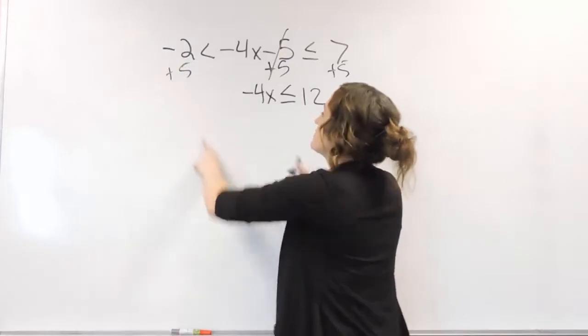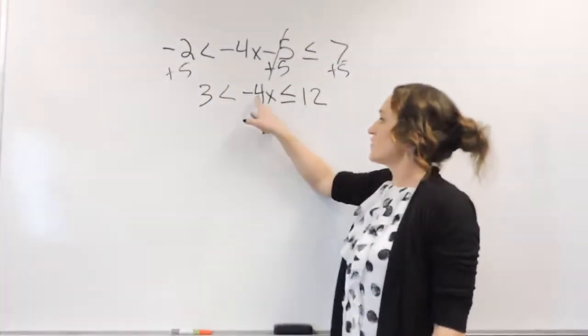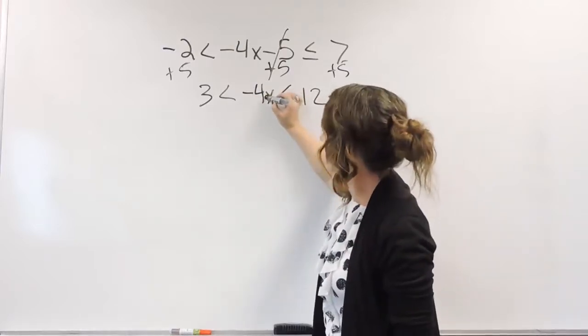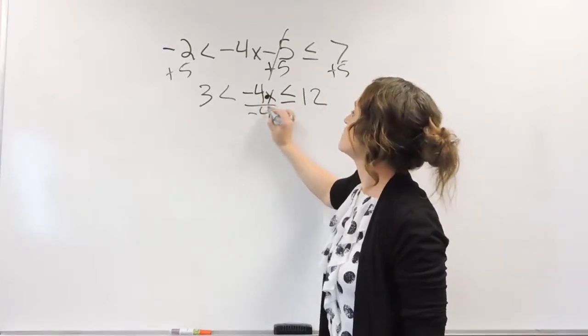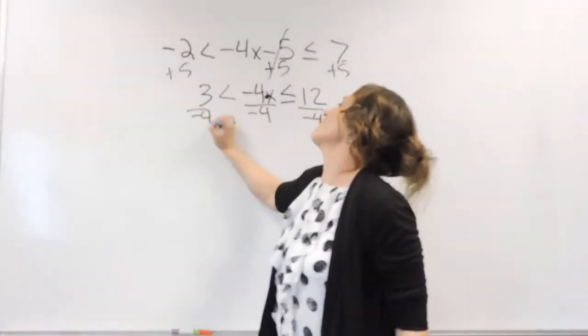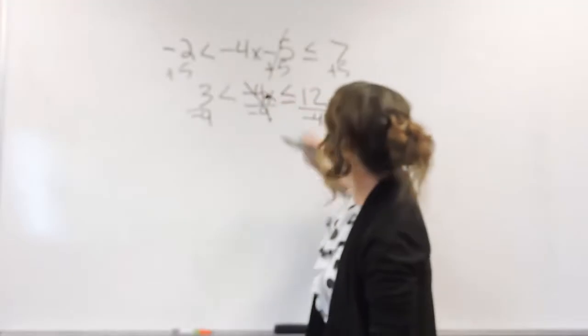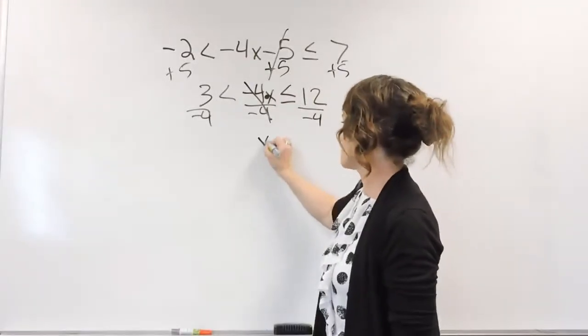Negative 2 plus 5 is 3. So the next thing we need to do is divide out our coefficients. So this is a negative 4 times x. We do the opposite and divide, which means everything needs to be divided by the negative 4.